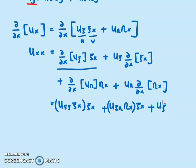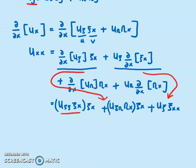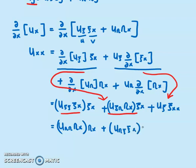Taking the derivative of ψ_x gives ψ_xx. Continuing with the second part, we have U_η·η_x·η_x plus U_η·ψ_x·psi_x·η_x. This gives a U_ηη·η_x² term.